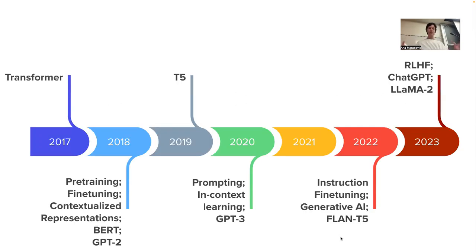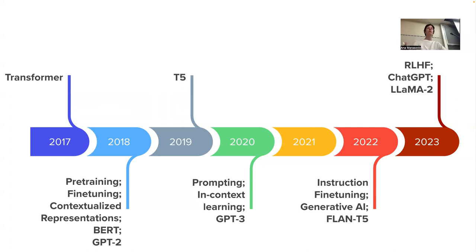In our timeline, we have now come to the 2022 era. Last time what we talked about was 2020 to 2022 — the idea of in-context learning, giving those few examples in the context, and then prompting the model. That was proposed in 2020. But the idea to do this second stage of pre-training happened in 2022.